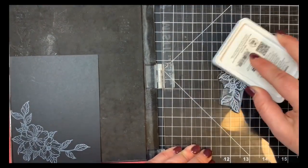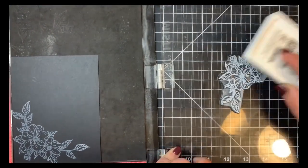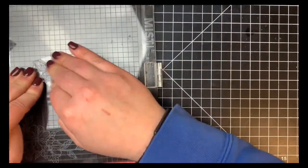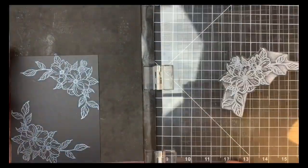Once that was stamped out, I rotated my card panel 180 degrees and stamped that again so it's in the same position on both the top and the bottom of the card.